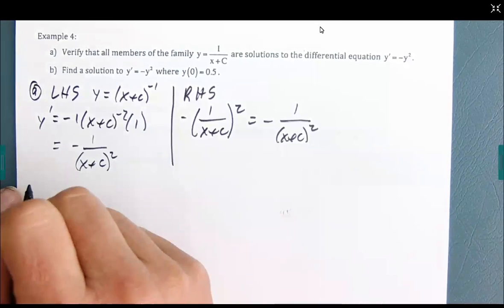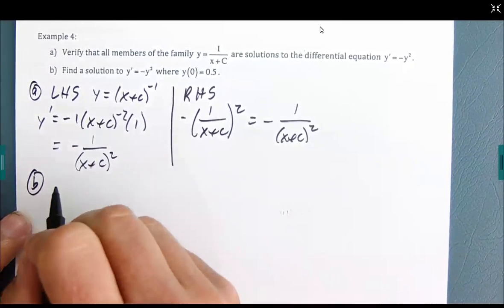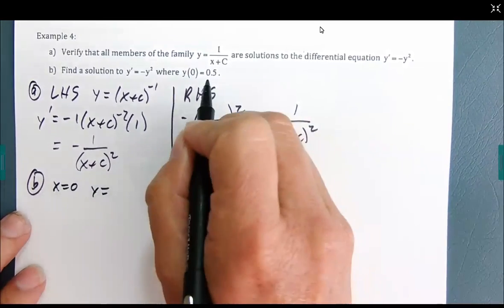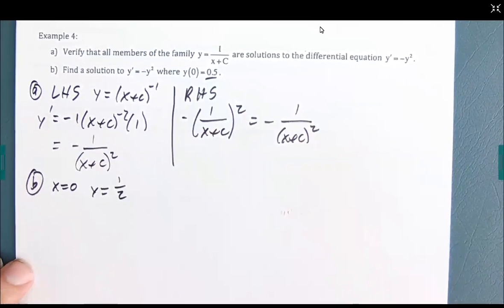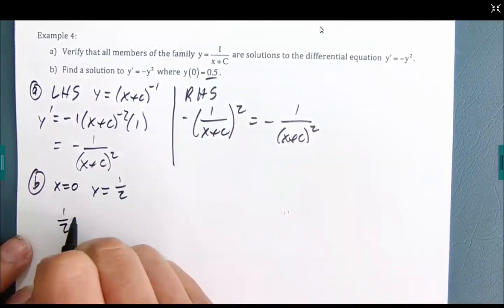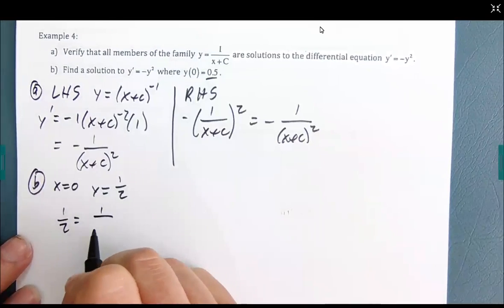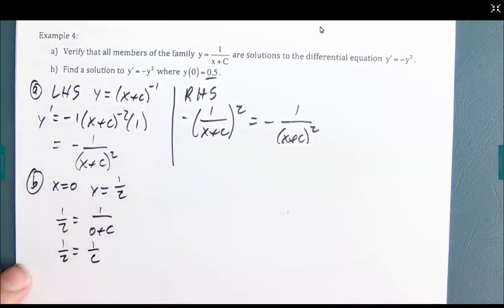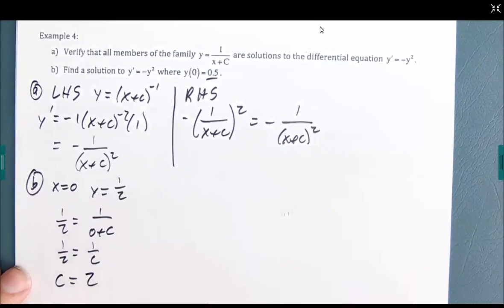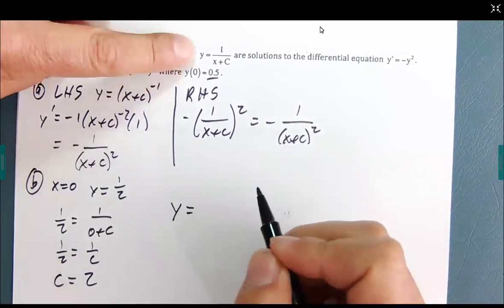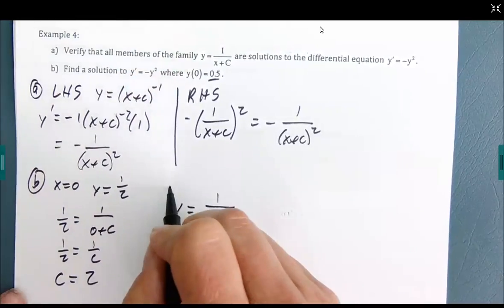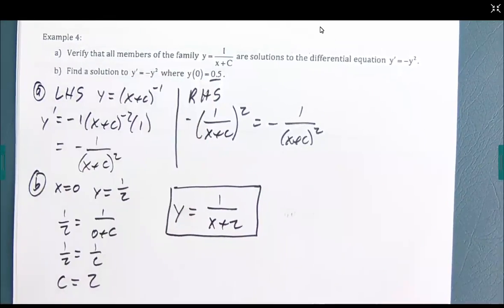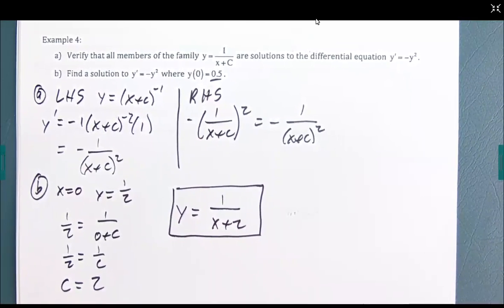For part B, the initial value problem says when x = 0, y = 0.5 (which I'll write as 1/2). Plugging in: 1/2 = 1/(0 + C), which means C = 2. So the specific solution y = 1/(x + 2) satisfies this initial value problem. That's our first introduction to differential equations — in the next video we'll actually be solving them, and then we can do this verification process afterwards.